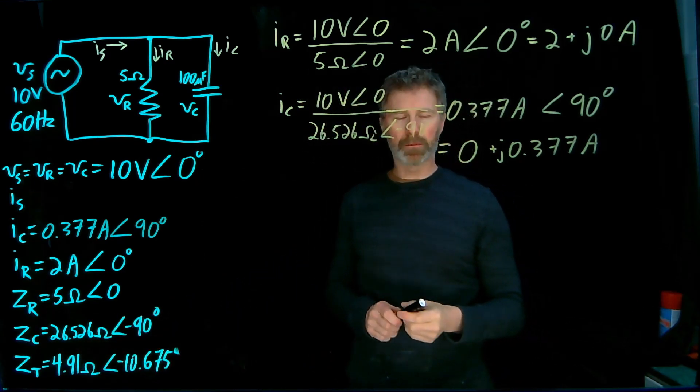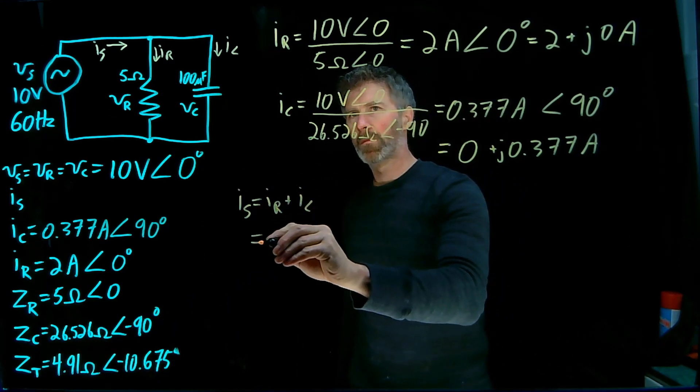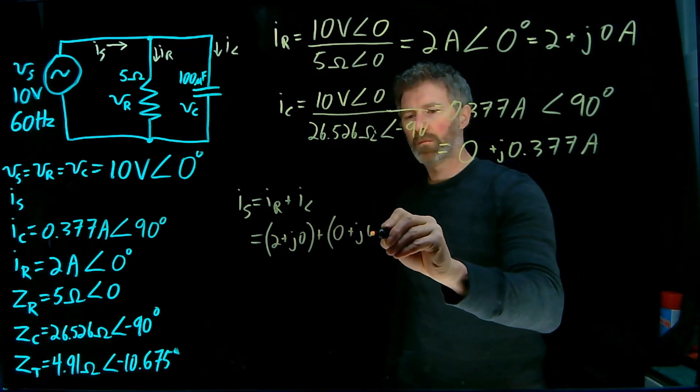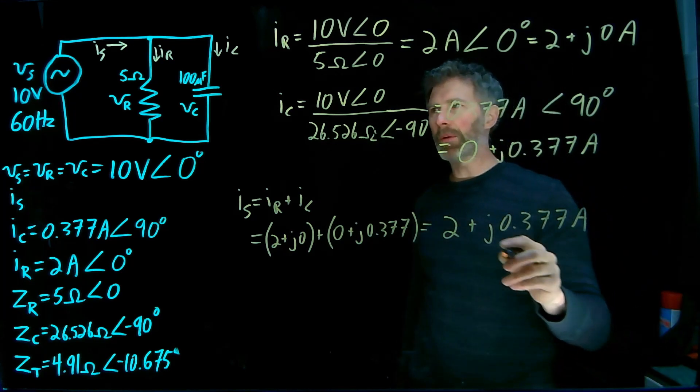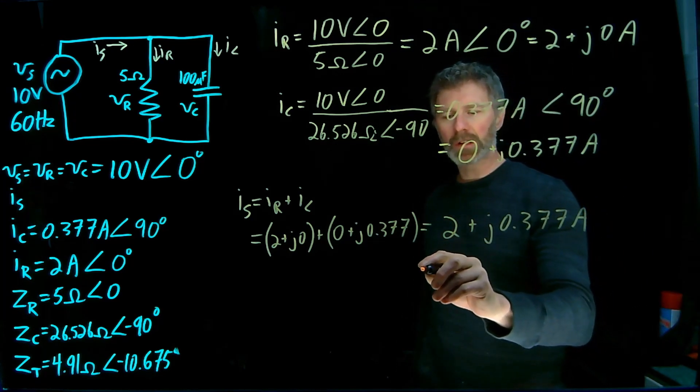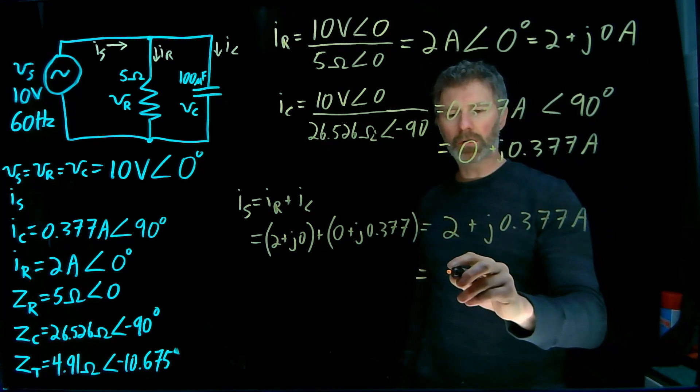So, 2 + j0.377 amps for the total current coming from that source in rectangular coordinates.